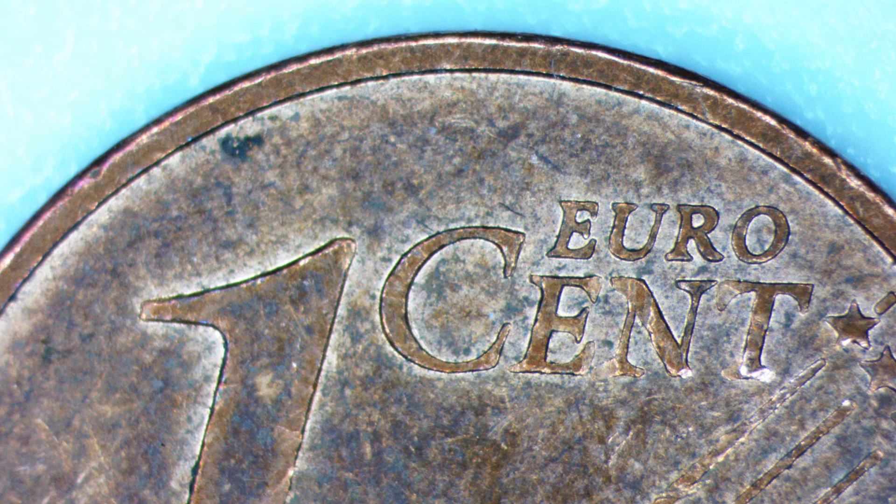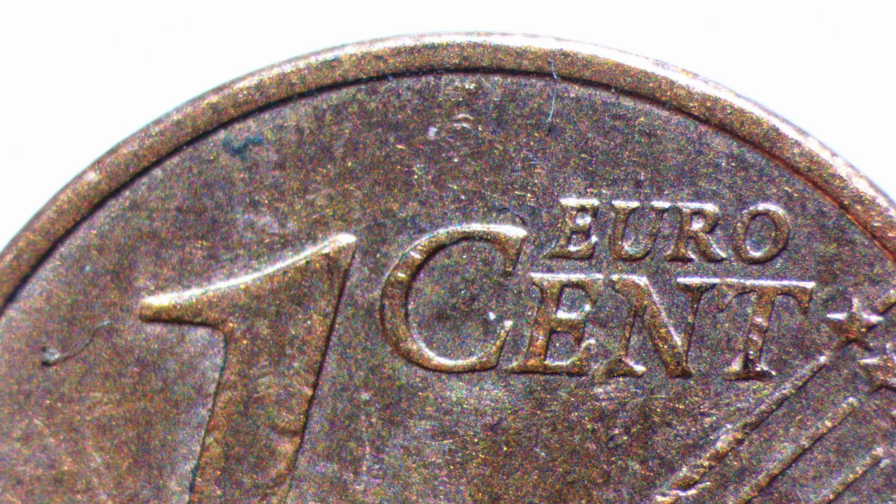This is a copper coin and I'm now using the ring light which gives a very even illumination. Because the light comes directly from the top, there are no shadows and the image looks quite flat. And this is now light coming from the side and the effect is quite different. The imprint of the coin now casts a shadow and this gives a much stronger impression of depth.